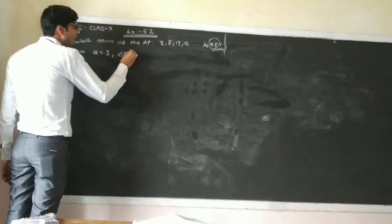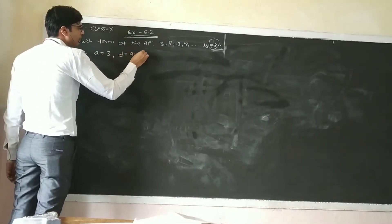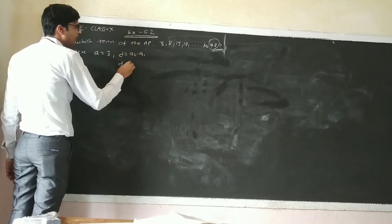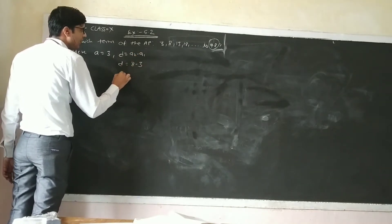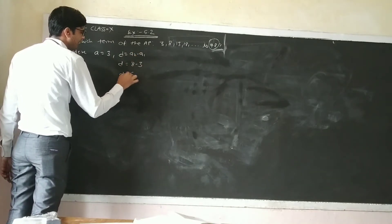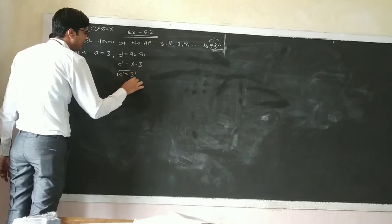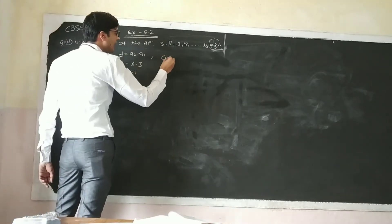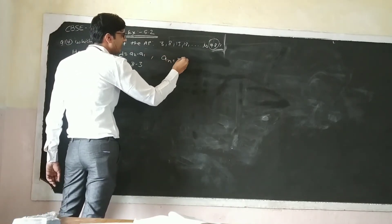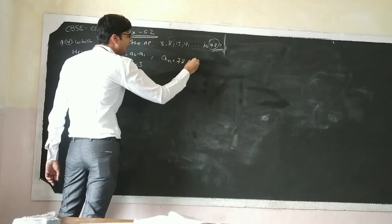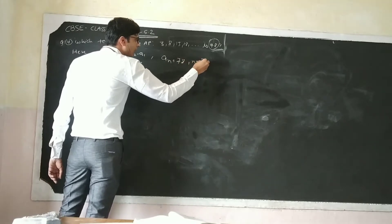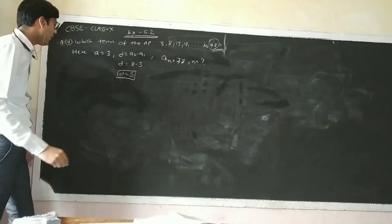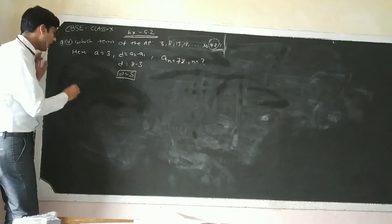How do we find the common difference? We find A2 minus A1, so A2 minus A1 is 8 minus 3, which gives D equals 5. And the last term AN is given as 78. So we find the value of N using the formula.